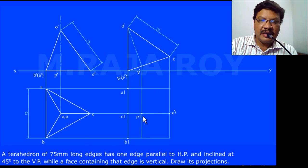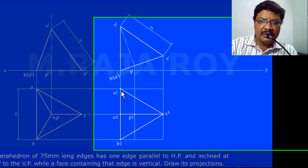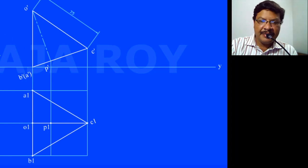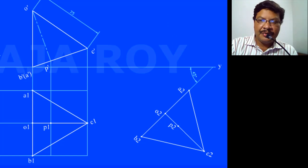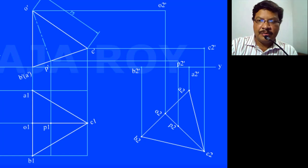After getting the second top view, in the third stage you have to represent the edge inclination. The reference edge is AB, here A1B1, which must make 45 degrees with VP. Reconstruct the figure at an angle of 45 degrees — draw a 45-degree line and reconstruct the figure along it. Then draw projectors from the top view and locus lines from the front view, and obtain the intersection points.